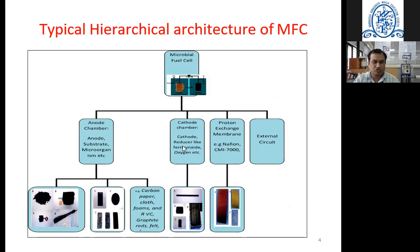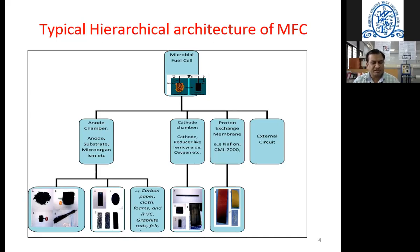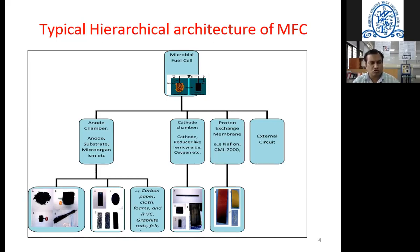This diagram shows the hierarchical architecture of the MFC. The MFC generally has two compartments: anode chamber and cathode chamber. In the anode chamber, materials like carbon, graphite, or other metals may be used. The anode chamber must have the substrate — that is, wastewater — and other contaminants depending on your research.